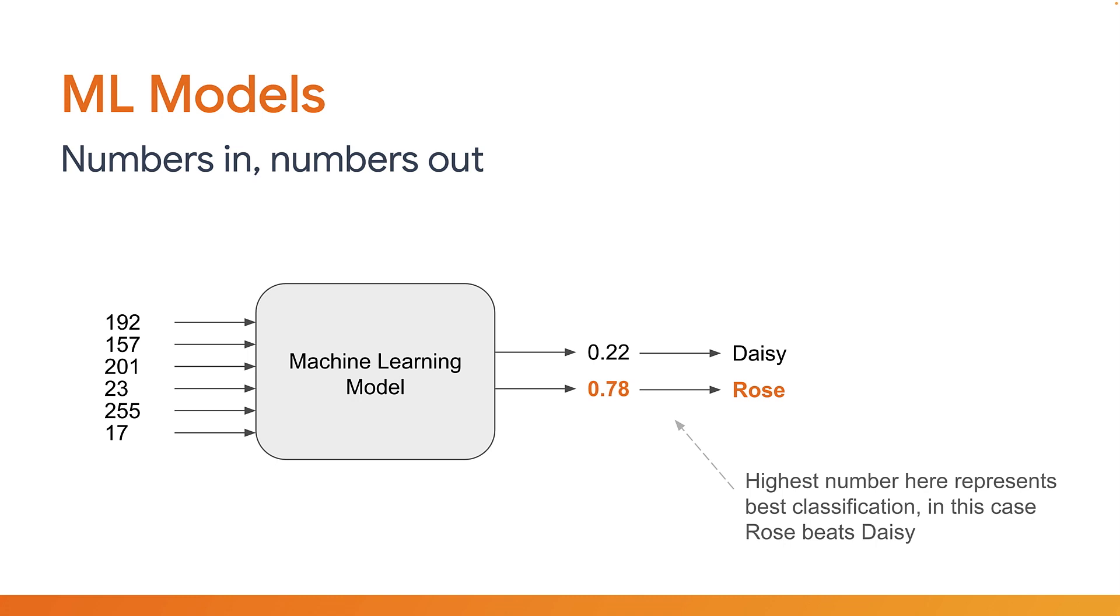For example, if the machine learning model was designed to recognize different species of flower from some input values, then each output number may represent the probability of how confident it was that a certain type of flower was represented by those input values. And what might those input values be exactly? Well, maybe they represent the color of the flower's petals, or maybe they represent the stem length. Each model you make will require specific inputs that represent something about the thing you're trying to learn about.